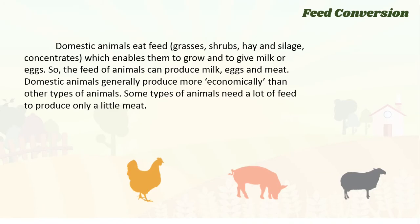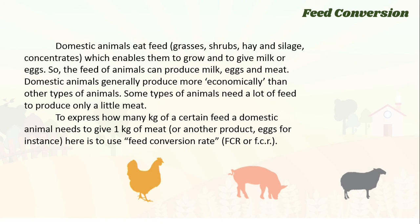Feed conversion: domestic animals eat feed like grasses, shrubs, hay, silage, and concentrates, which enables them to grow and to give milk or eggs. Some types of animals need a lot of feed to produce only a little milk. To express how many kilograms of a certain feed a domestic animal needs to give 1 kilogram of meat or another product — like eggs — we use the feed conversion ratio, or FCR.